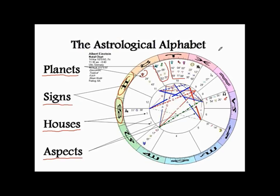You have 360 degrees in a circle. If we divide that by 12, we get 30 degrees each. So basically each sign of the zodiac occupies 30 degrees. And in the wheel, the sequence is always anti-clockwise.